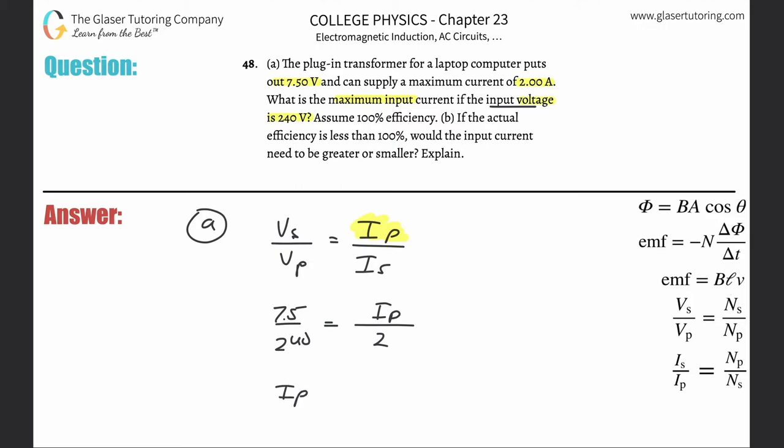Now all you have to do is just do a little cross multiplication. So 7.5 times 2 divided by 240, and that's going to work out to be about 0.0625 amps. So that is now the primary current.